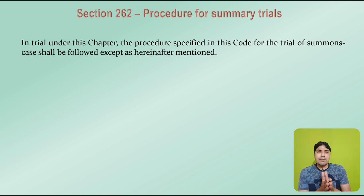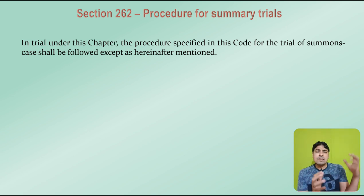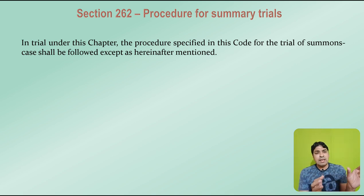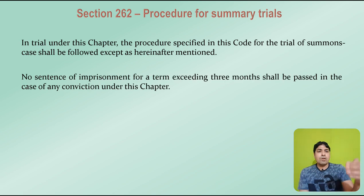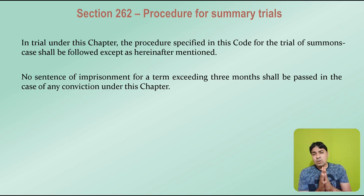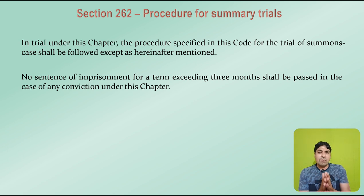Next is Section 262 — procedure for summary trial. In trials under this chapter, the procedure specified in this Code for the trial of summons cases shall be followed, except as hereinafter mentioned. The same procedure as in summons trial will apply in summary trial. Additionally, no sentence of imprisonment for a term exceeding 3 months shall be passed in the case of any conviction under this chapter.